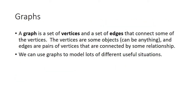So what is a graph? I'm giving you my informal definition first, and then we'll look at the textbook author's more formal version later. Basically, a graph is just a set of vertices and a set of edges that connect some of the vertices. The vertices are just some objects — they can really be anything. The edges are just pairs of vertices that are connected, and they usually represent some kind of relationship. We can use graphs to model lots of different useful situations, particularly in discrete math and computer science research.